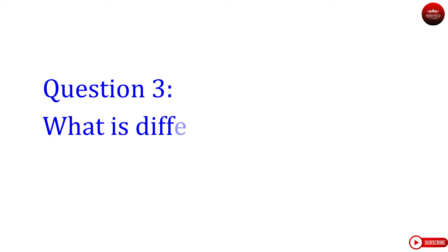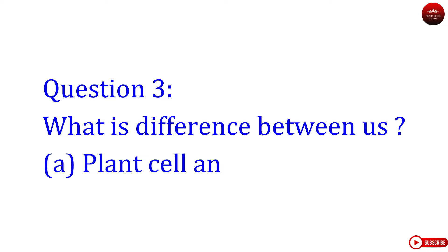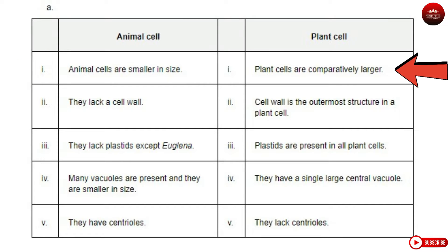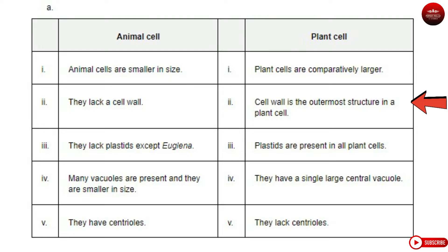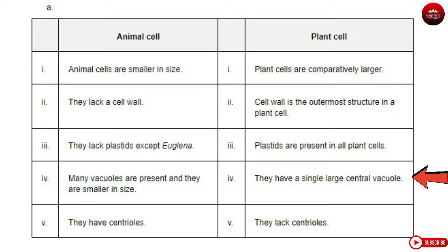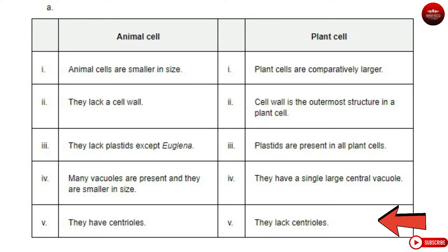Question 3: What is the difference between — A. Plant cell and animal cell? Answer A. Animal cells are smaller in size, while plant cells are comparatively larger. Animal cells lack a cell wall, whereas cell wall is the outermost structure in a plant cell. Animal cells lack plastids except Euglena, while plastids are present in all plant cells. Many vacuoles are present in animal cells and they are smaller in size, whereas plant cells have a single large central vacuole. Animal cells have centrioles, while plant cells lack centrioles.